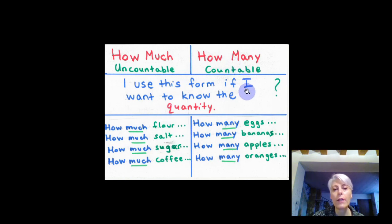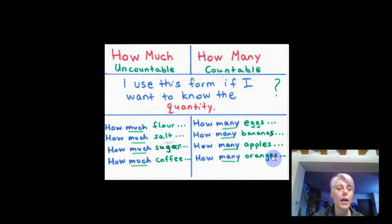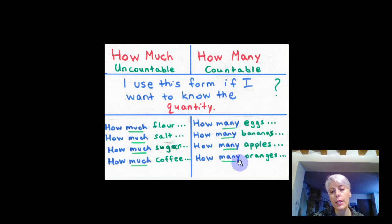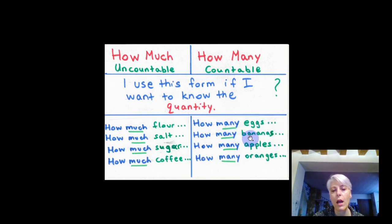When the word is countable, I use 'how many': how many eggs have you got, how many bananas have you got, how many apples and oranges have you got. If I use he or she: how many eggs has she got, how many bananas has she got, how many apples, how many oranges has he got.